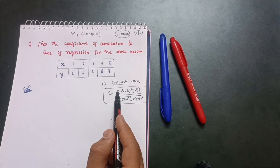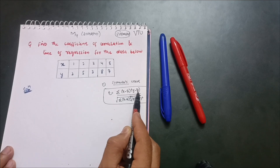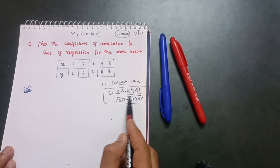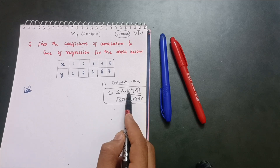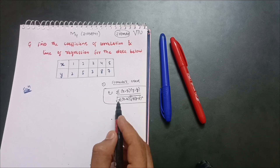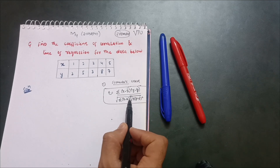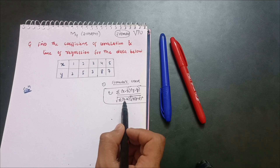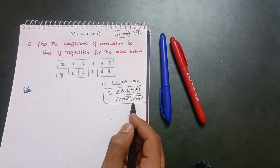For the coefficient of correlation, the formula to remember is: r equals summation of (x minus x̄)(y minus ȳ) divided by the square root of summation of (x minus x̄)² multiplied by the square root of summation of (y minus ȳ)². Here x̄ and ȳ are the means, and we need to calculate these terms.